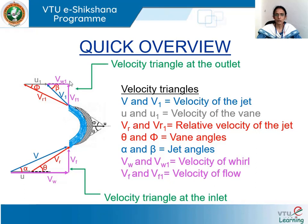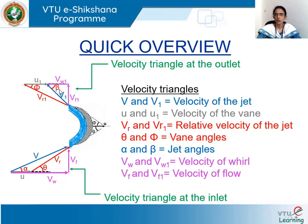Similarly, the outlet velocity triangle can be obtained using vr1, the relative velocity at the outlet, and u1, the velocity of the vane at the outlet. These two are inclined at an angle phi, where phi is the vane angle at the outlet. The closing side v1 gives the magnitude and direction of the absolute velocity at the outlet. v1 is inclined at an angle beta to the direction of motion of the vane at the outlet, known as the jet angle at the outlet. v1 can be resolved into components: velocity of whirl at the outlet and velocity of flow at the outlet.